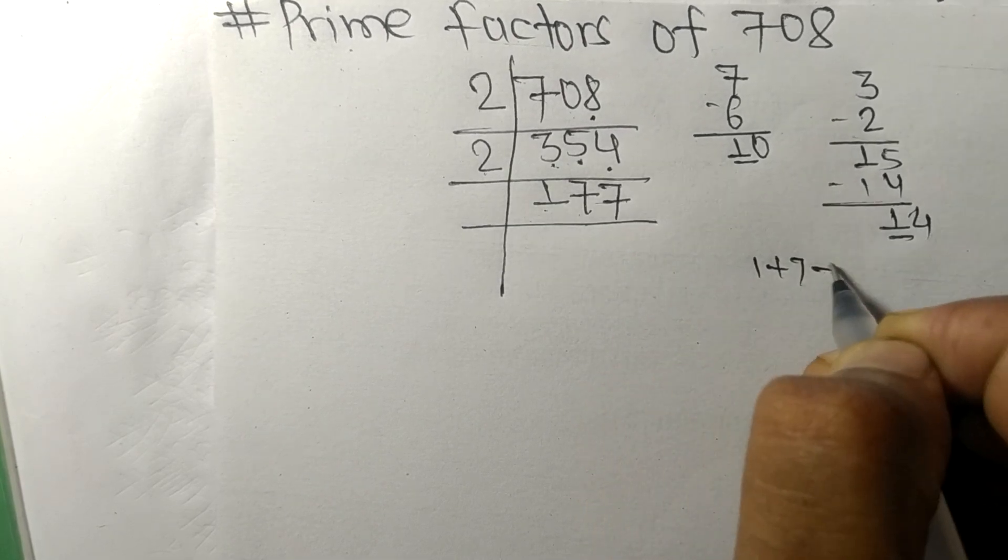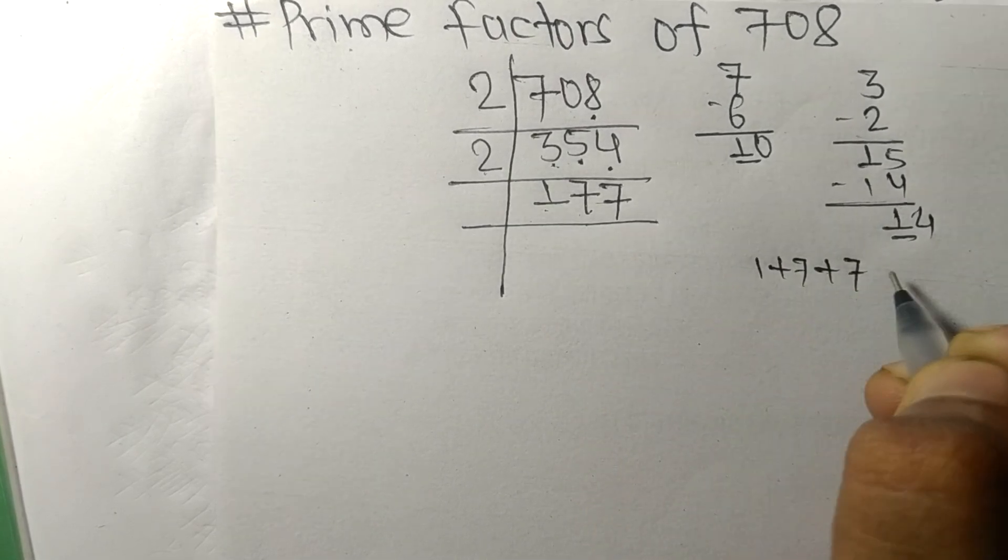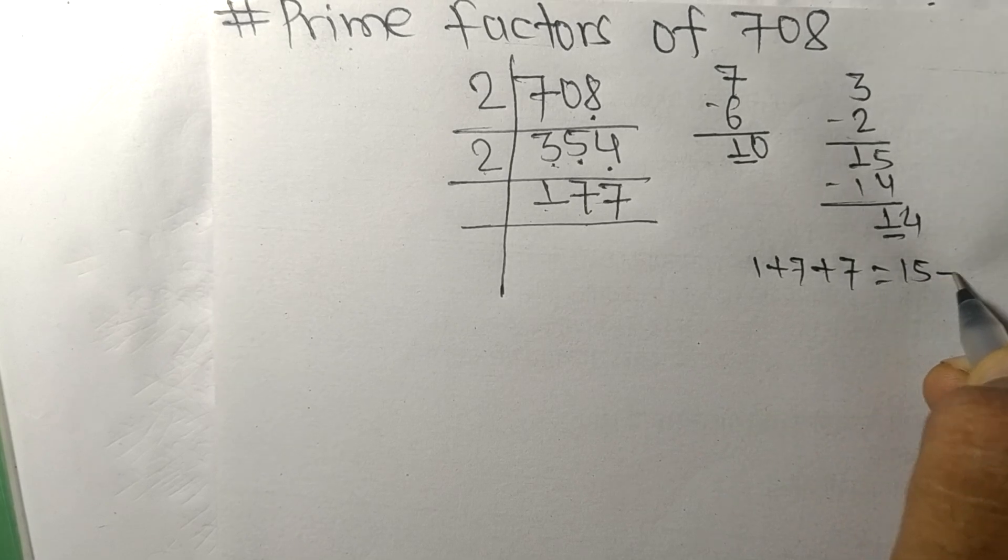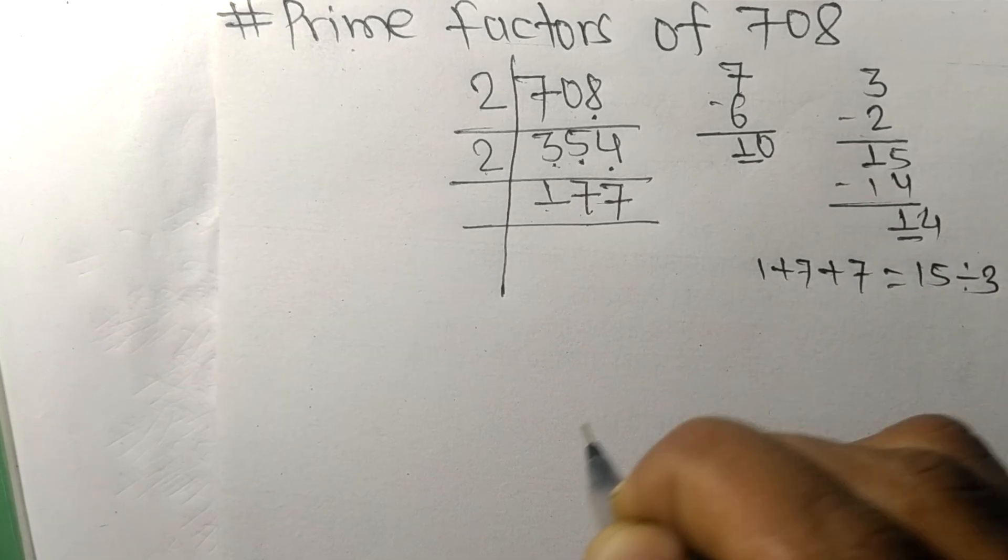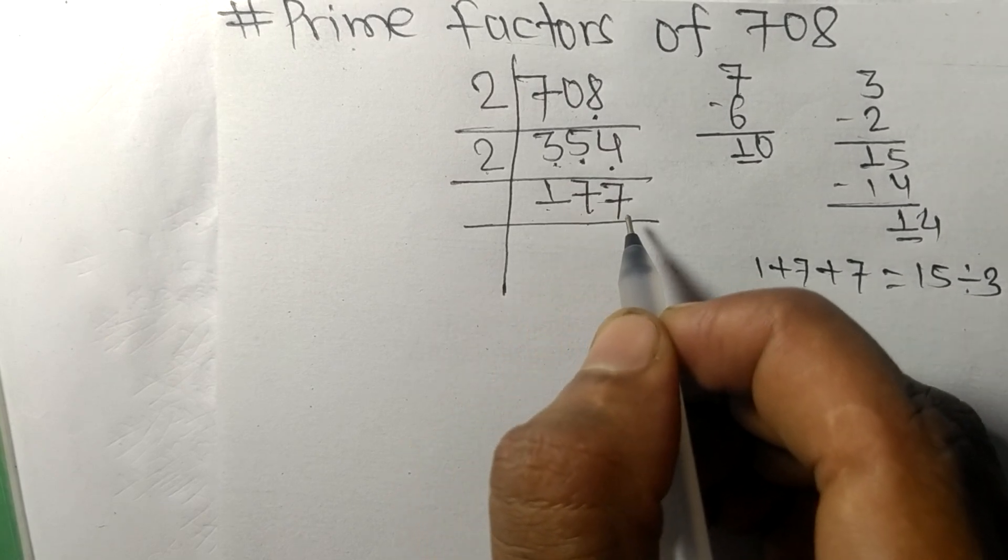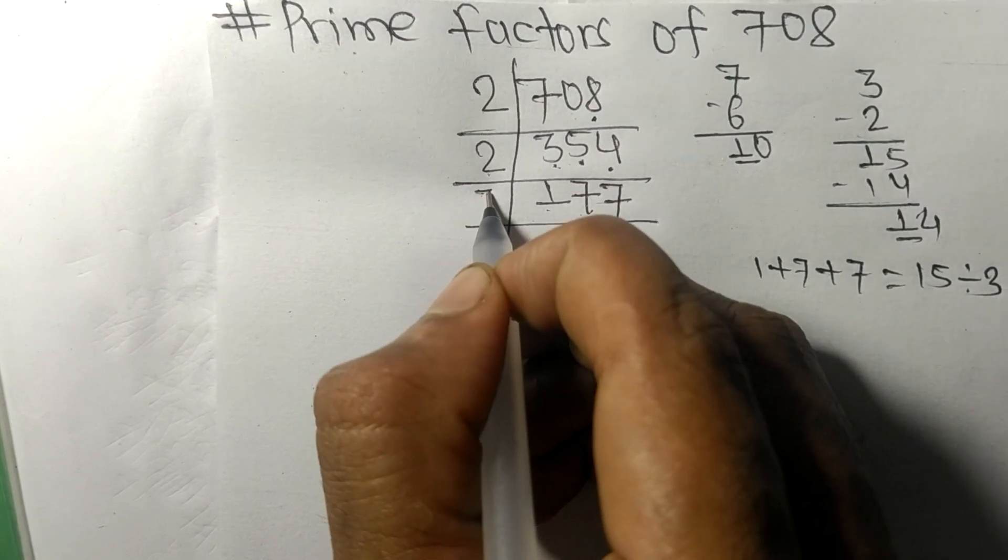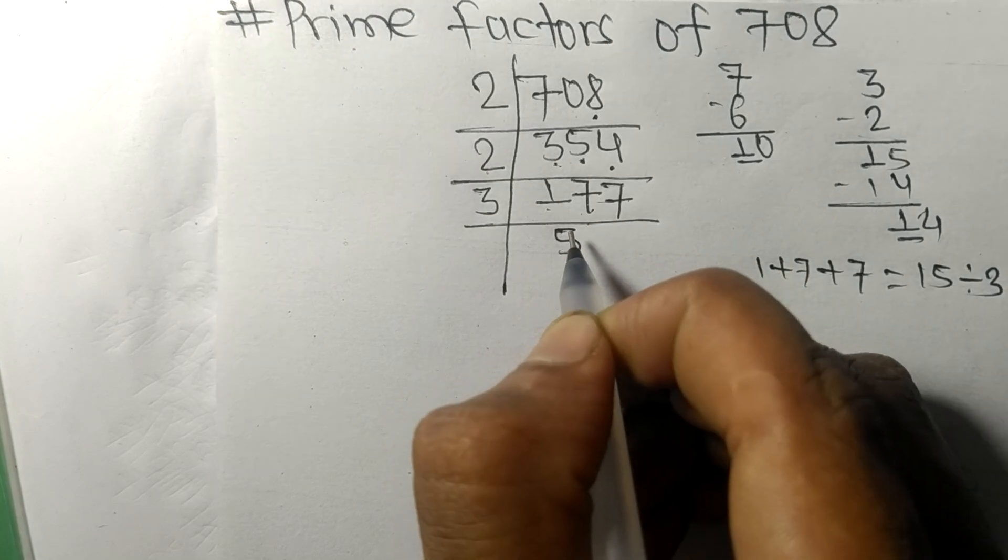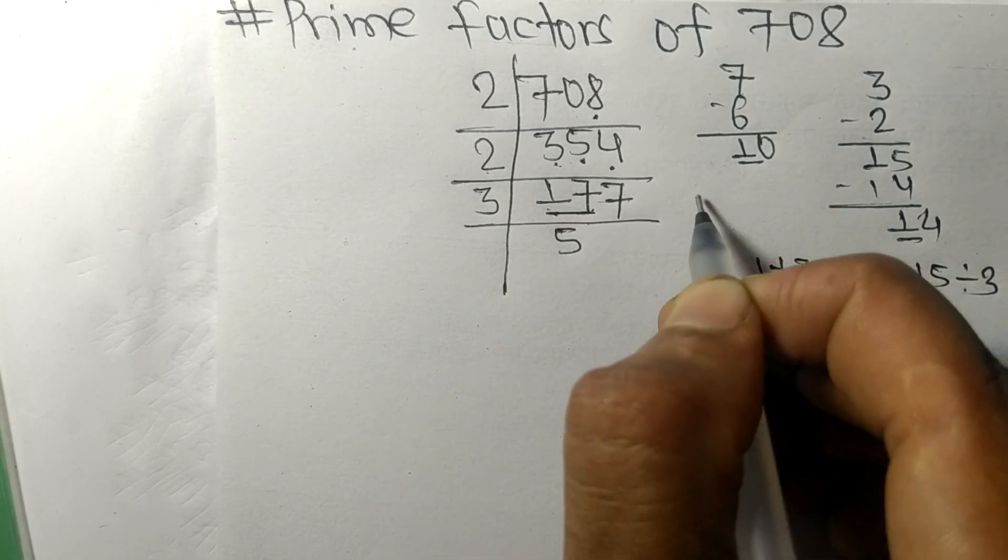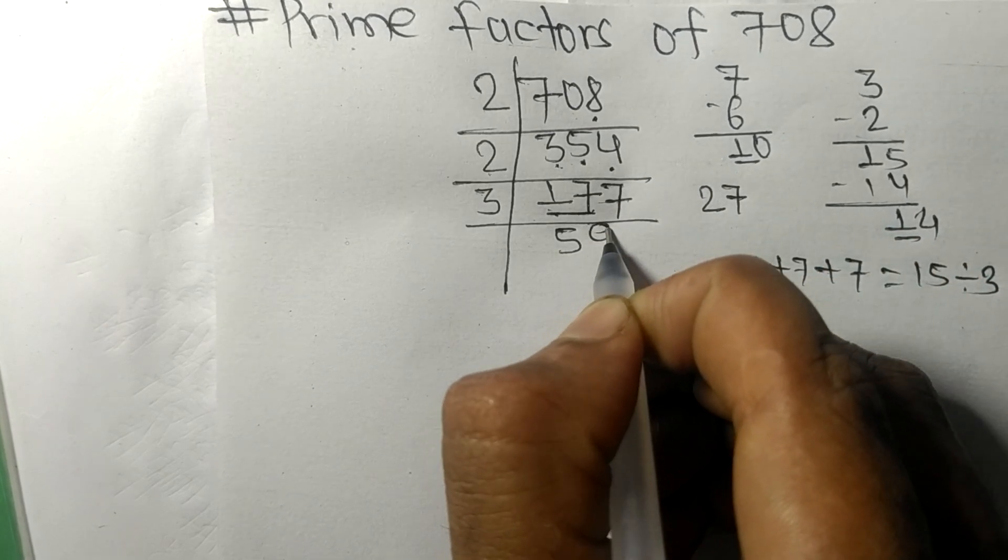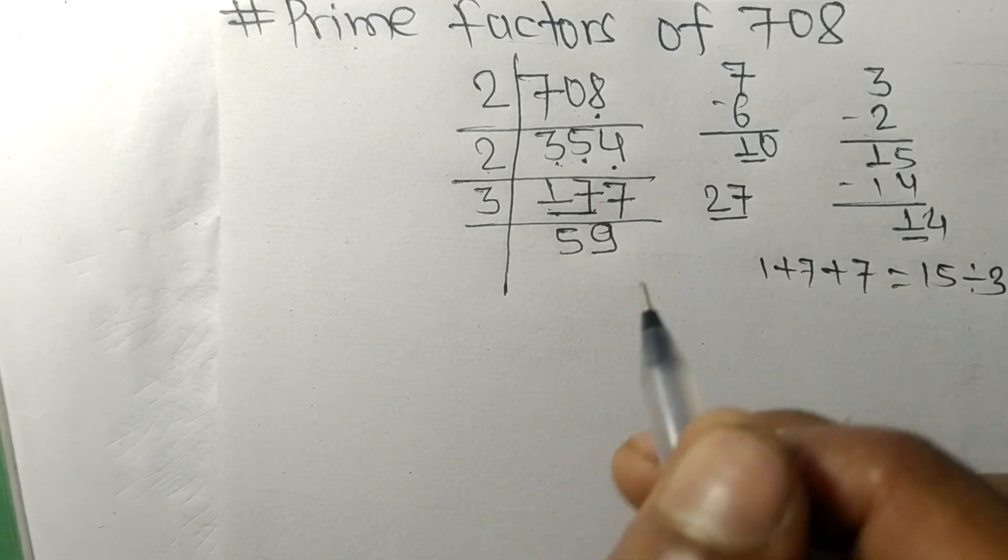15 is exactly divisible by 3, so 177 is also divisible by 3. 3 times 5 means 15, remainder here 2, and 7, 27, 3 times 9 means 27.